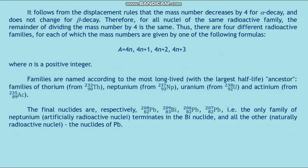It follows from the displacement rules that the mass number decreases by 4 for alpha decay and does not change for beta decay. Therefore, for all nuclei of the same radioactive family, the remainder of dividing the mass number by 4 is the same. Thus there are 4 different radioactive families, for each of which the mass numbers are given by one of the following formulas: A = 4n, A = 4n+1, A = 4n+2, and A = 4n+3, where n is a positive integer.